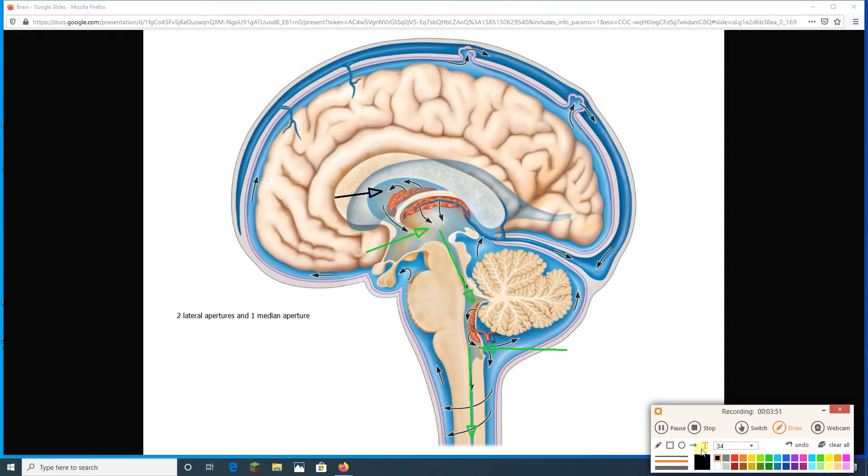Now, on this picture, do notice that we have a dural sinus here, and a dural sinus here as well. The dural sinus is going to have arachnoid villi. Here's an arachnoid villus. I can't get a circle around it.